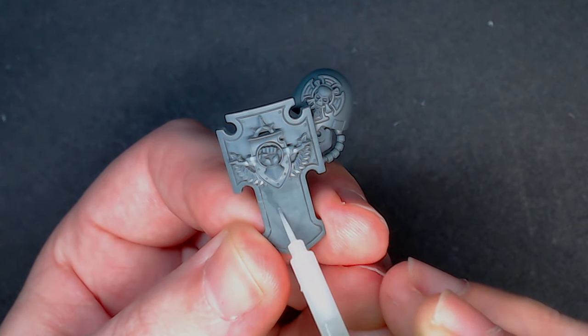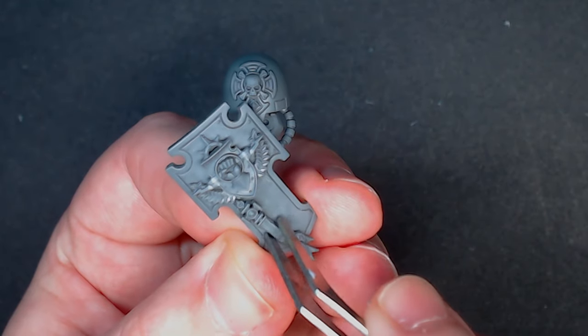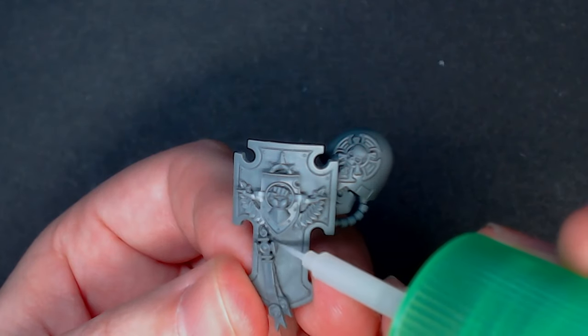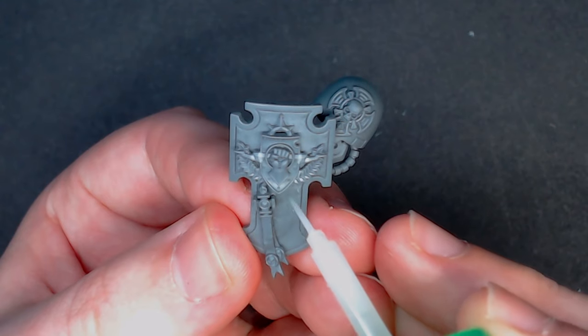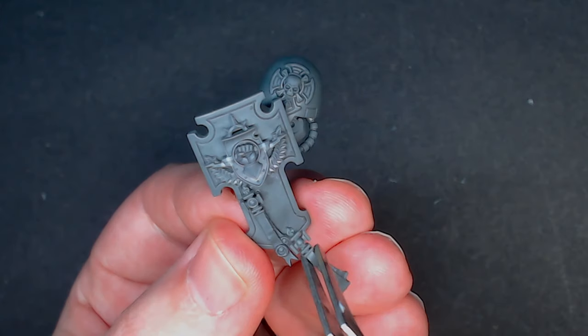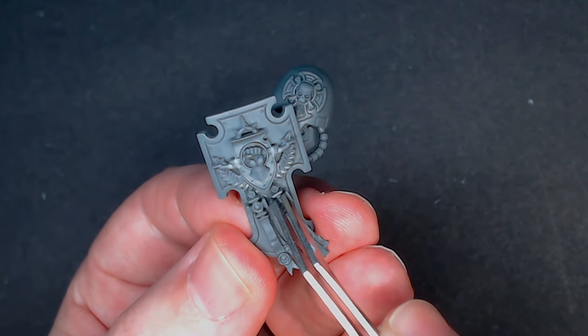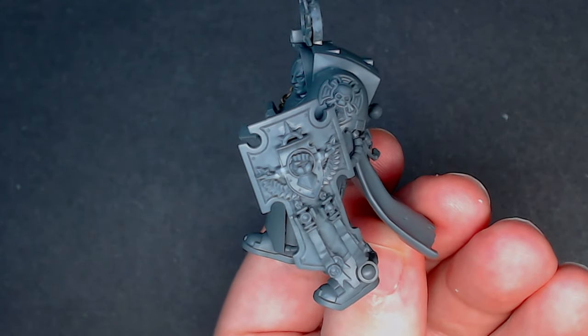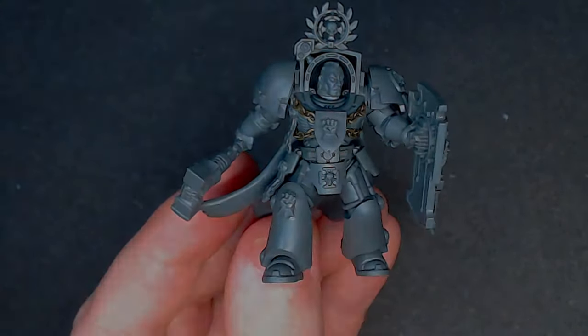For some final touches I thought the shield looked a bit bare on the bottom half so what I did is I took some purity seals from the Terminator kit and just stuck them down on there. Just to give it a bit of visual interest. Once those purity seals are dried I then glued the arms to the torso, based the model, painted him up, which left me with this.